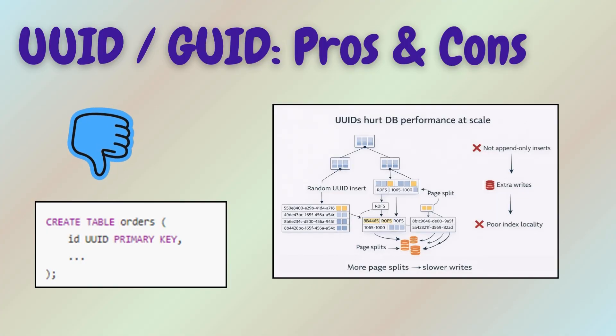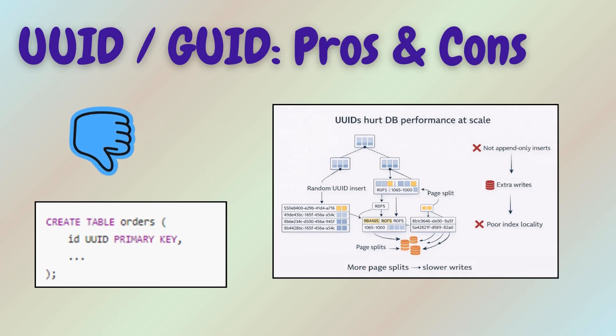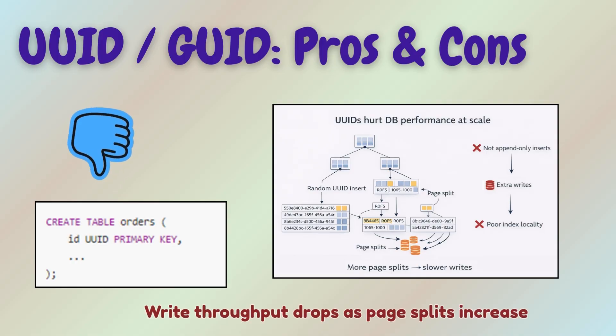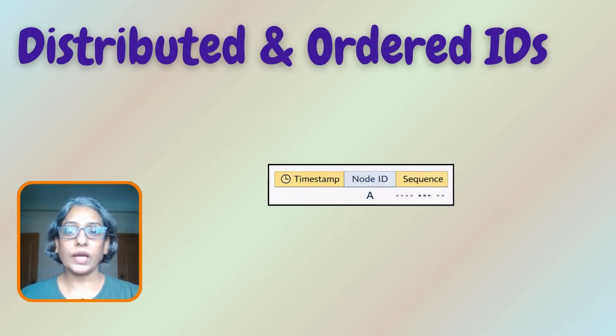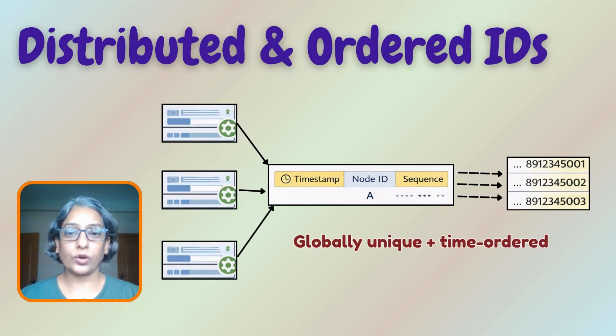Non-sequential UUIDs cause pages in the B-tree index to split more frequently. The result is that your write throughput drops. UUIDs solve the distributed problem, but they damage database efficiency. What if we want IDs that are both distributed and ordered? That brings us to the snowflake family.